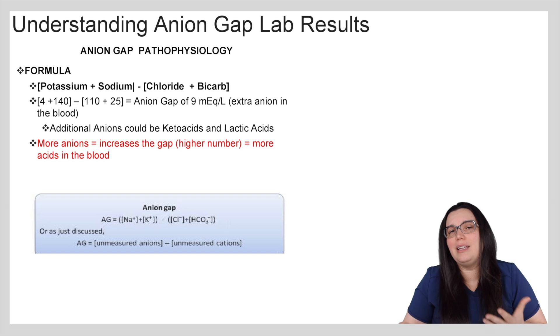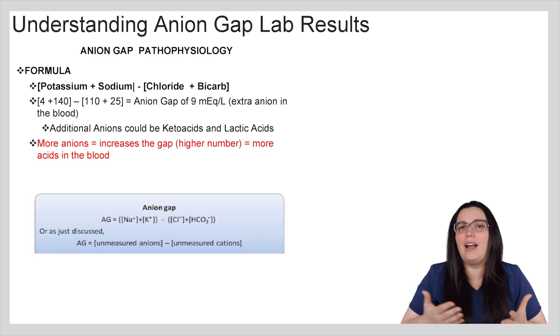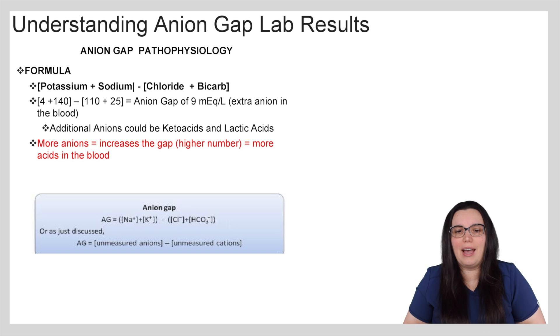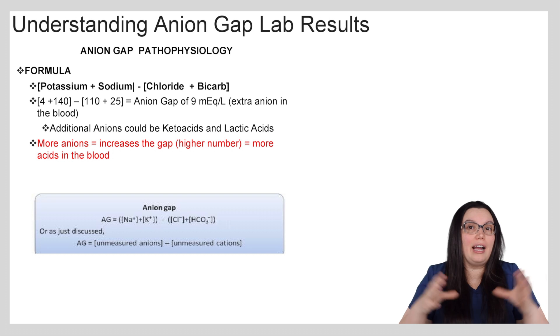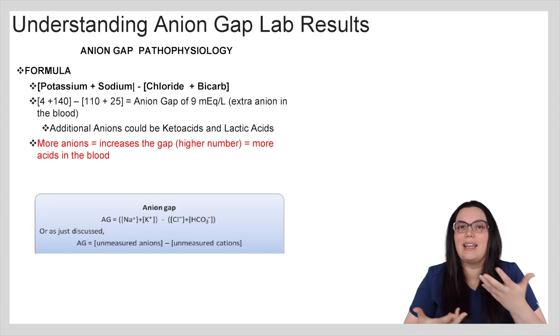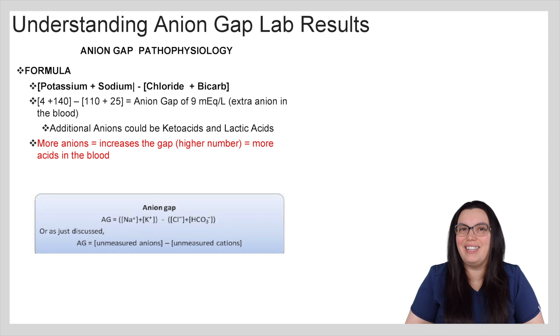Ultimately, the more anions we have, the greater the gap — meaning the higher the number, the more acids that can be found in the blood.